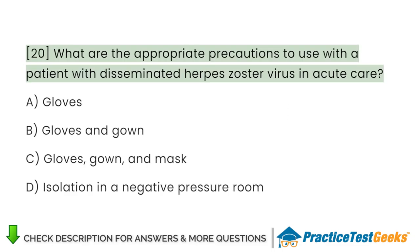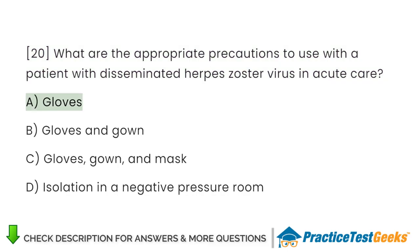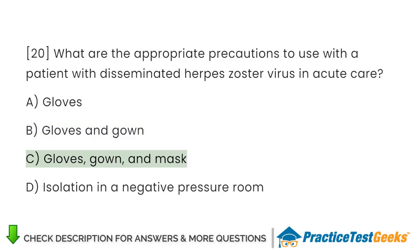What are the appropriate precautions to use with a patient with disseminated herpes zoster virus in acute care? A. Gloves. B. Gloves and gown. C. Gloves, gown, and mask. D. Isolation in a negative pressure room.